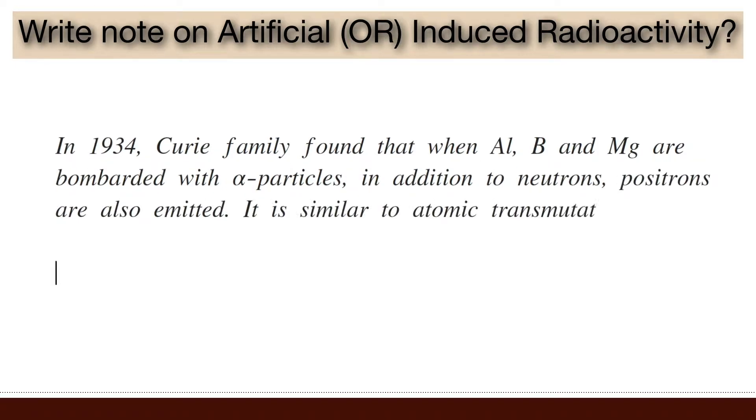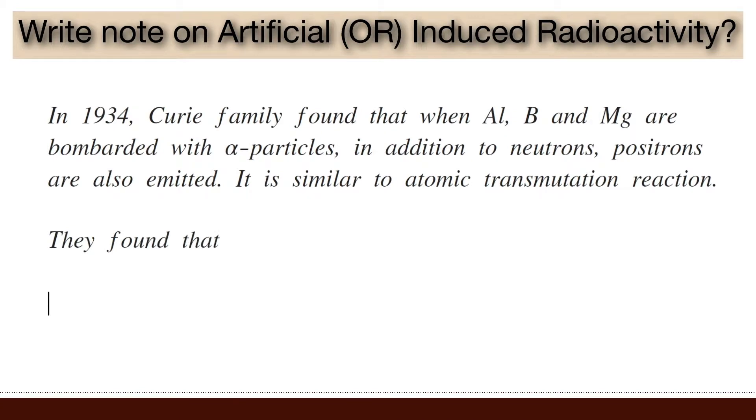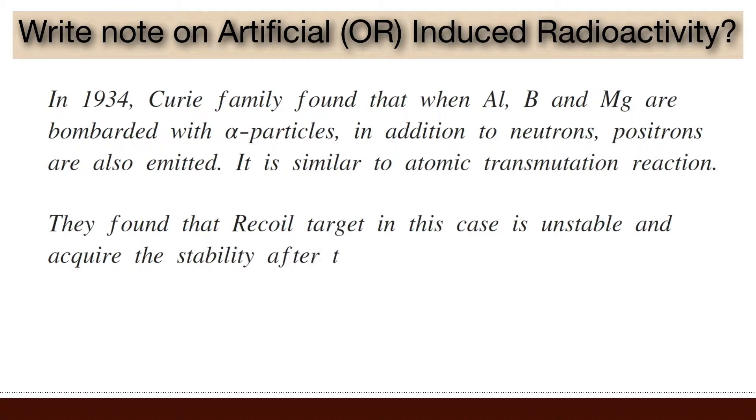This is similar to atomic transmutation reaction. They found that recoil target in this case is unstable and acquires stability after the emission of positron or electron.